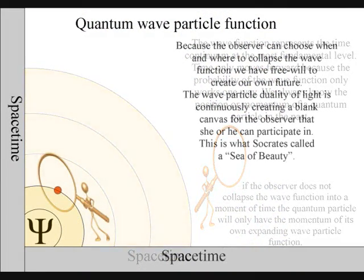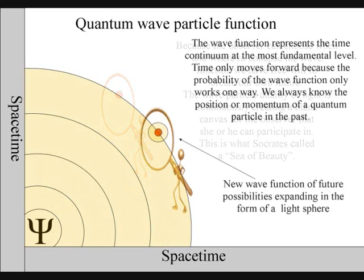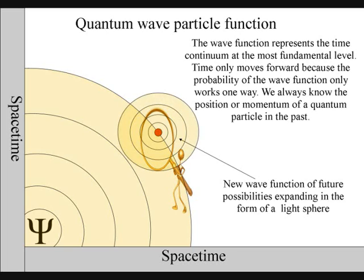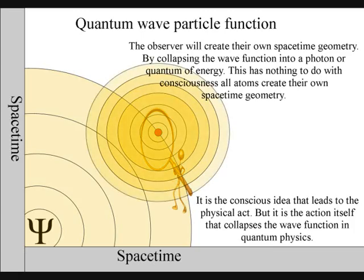It is because the observer can choose when and where to collapse the wave-function that we have free will. Life will create its own ripples in the fabric of space-time, forming its own broken symmetry of its own evolutionary path, or timeline.